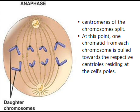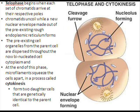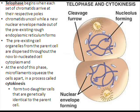Centrosomes begin to pull the chromatids apart in anaphase. Each chromatid then becomes a chromosome in its own right. The cell lengthens and each end now has equal DNA. Two daughter nuclei begin to form in the cells during telophase.